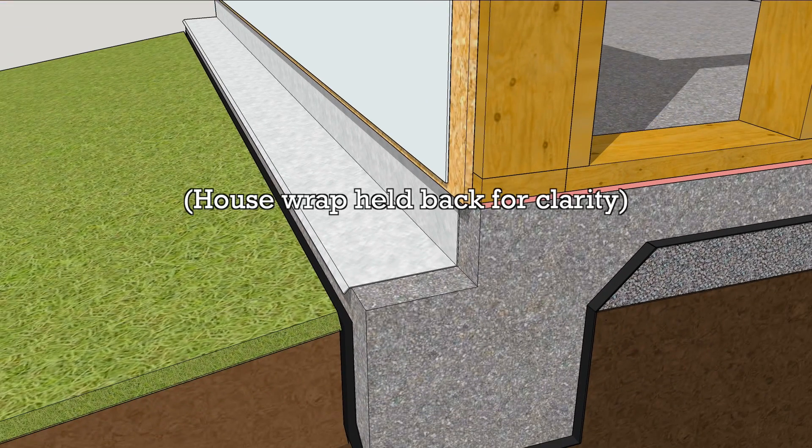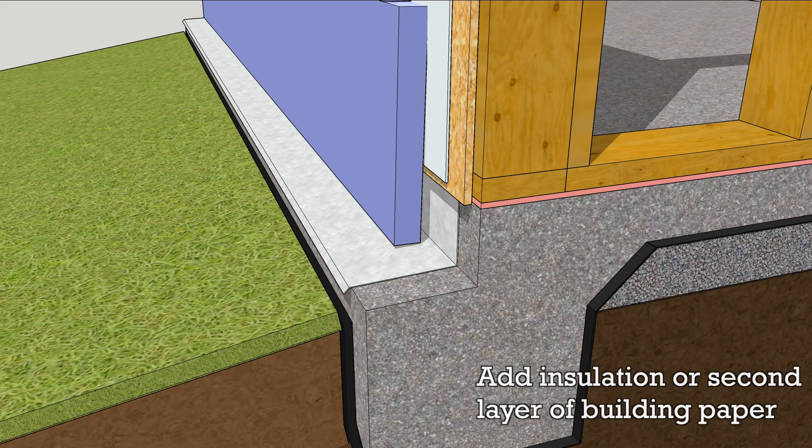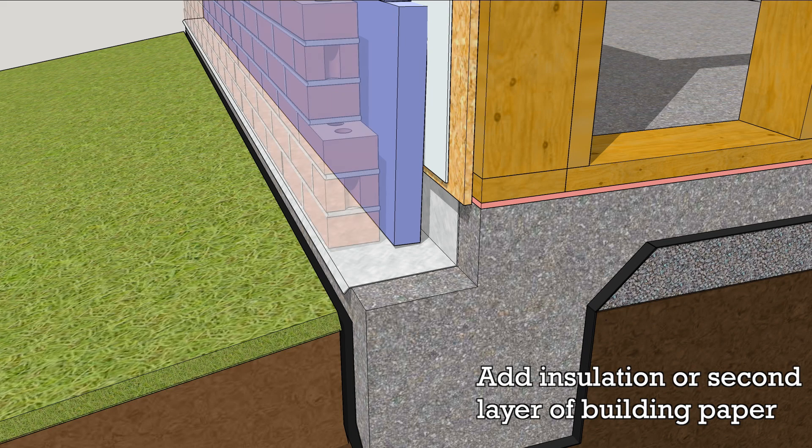Install the exterior insulation. If you're not adding insulation, add another layer of building paper. And call in the brick layers.